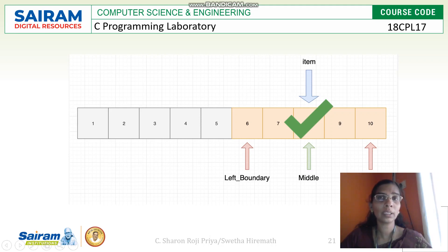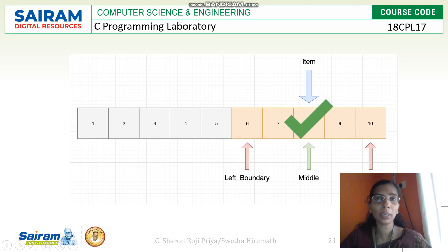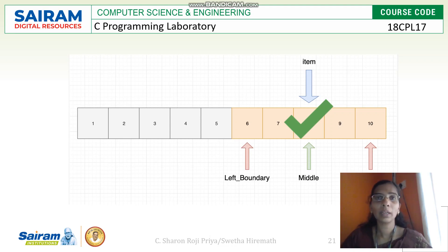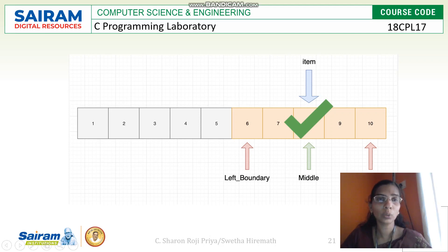The logic behind binary search is: the first index will be pointed by a variable — here I have taken it as 'first'. And the last index is pointed by the variable 'last'. I have to calculate the middle element. If I know the first and the last variable, calculating the middle will be very easy. First plus last divided by 2 will be my middle element.